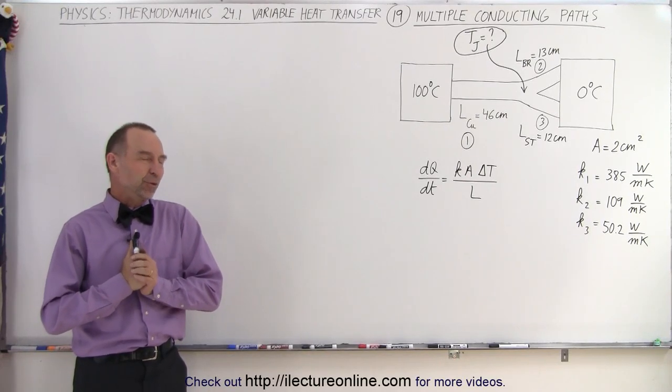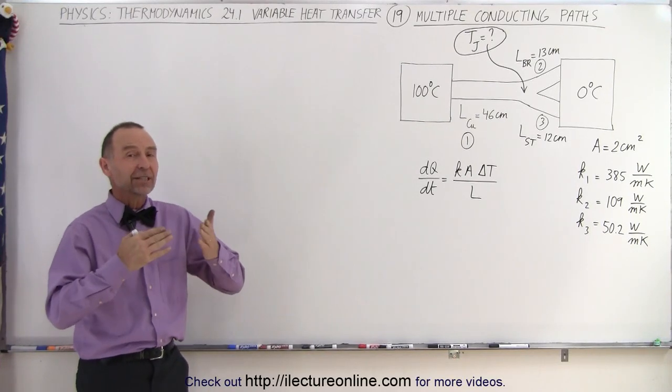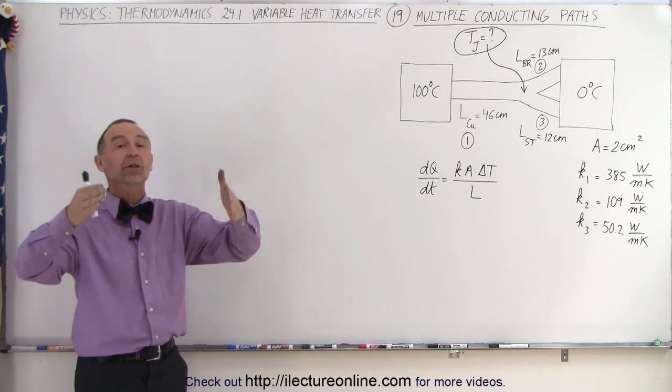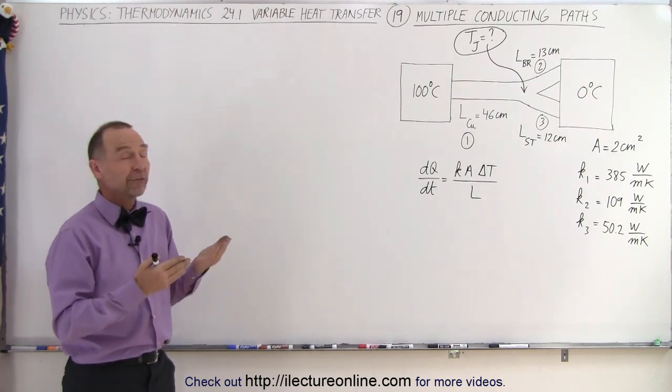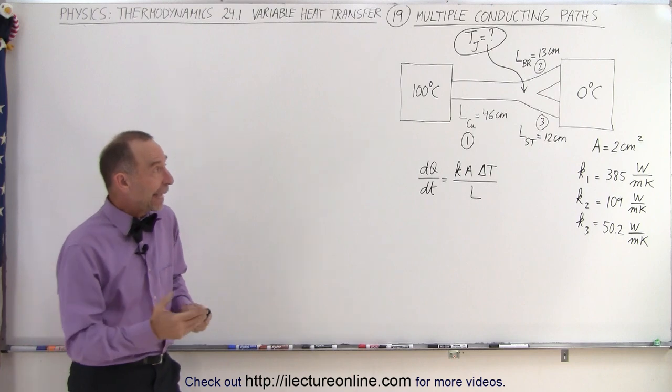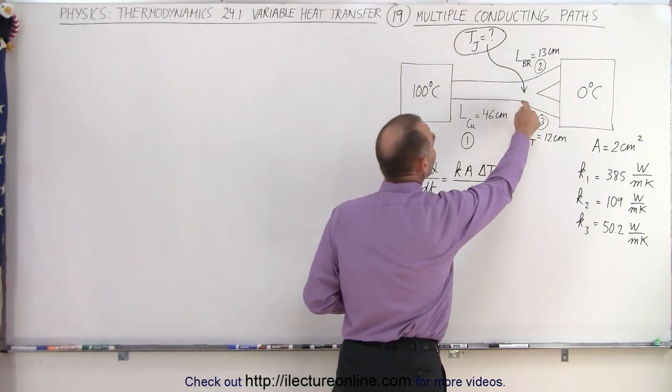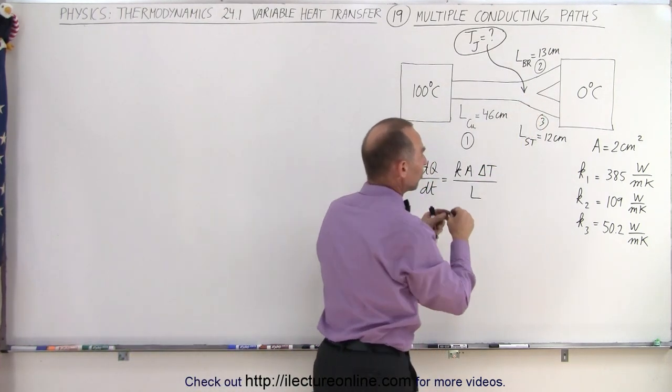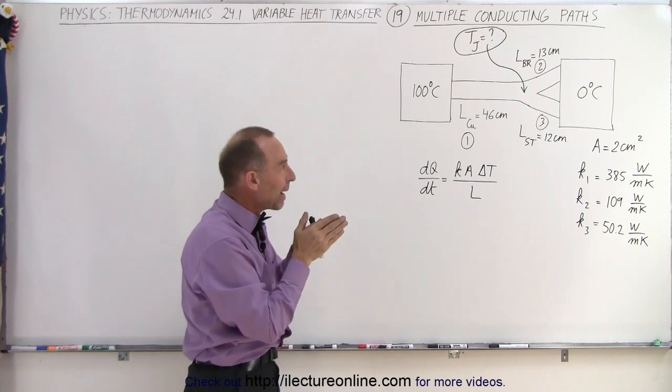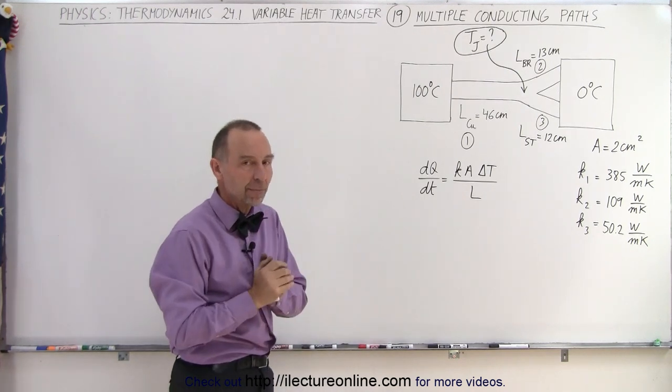Welcome to our lecture online! What do we do if we have a conducting path that splits up into two conducting paths and we're trying to find how much heat flows across? We're trying to find out the junction temperature, the temperature at which one conducting path splits up into two conducting paths.